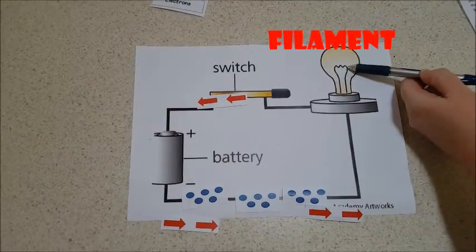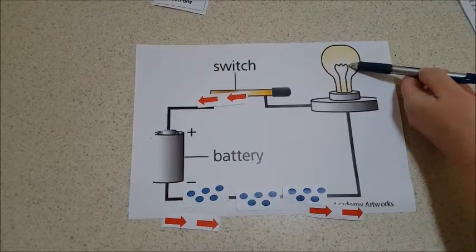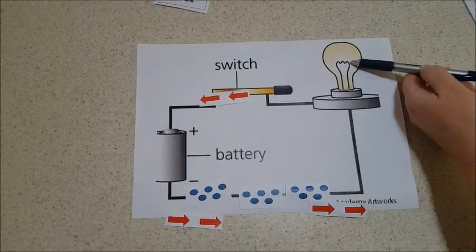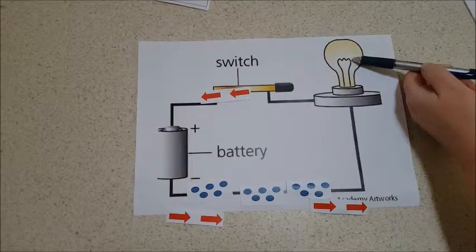There's the filament right there, which is part of the bulb that actually lights. When the electrons go through this filament, the electrical energy is changed to heat and light energy.